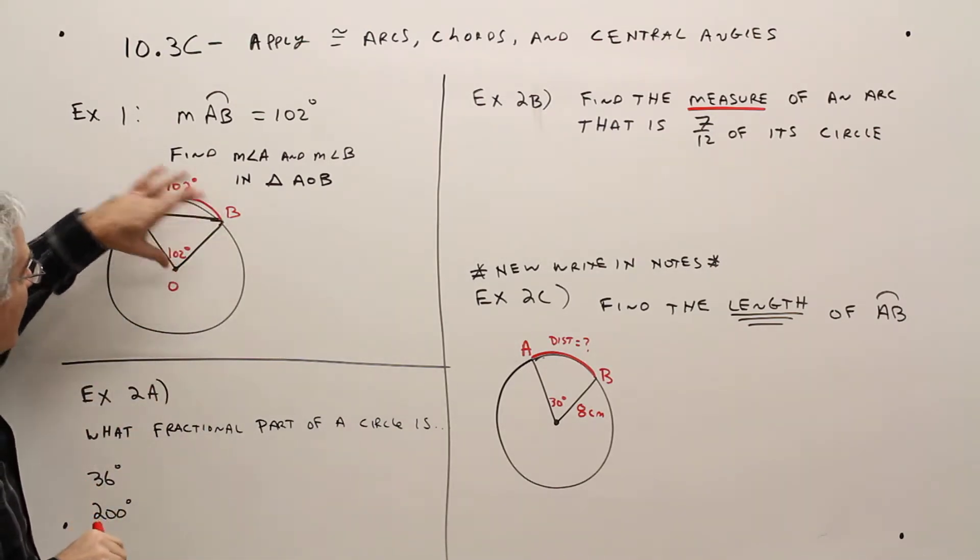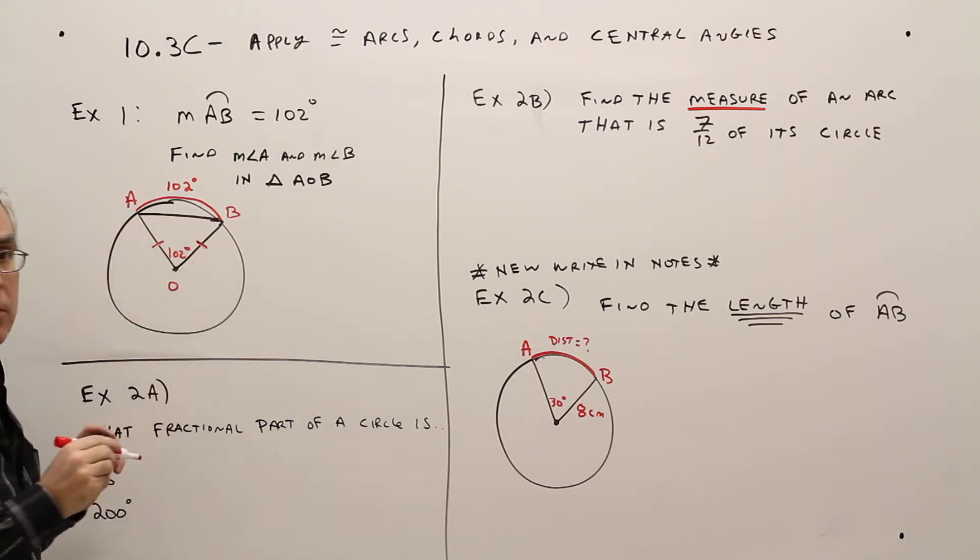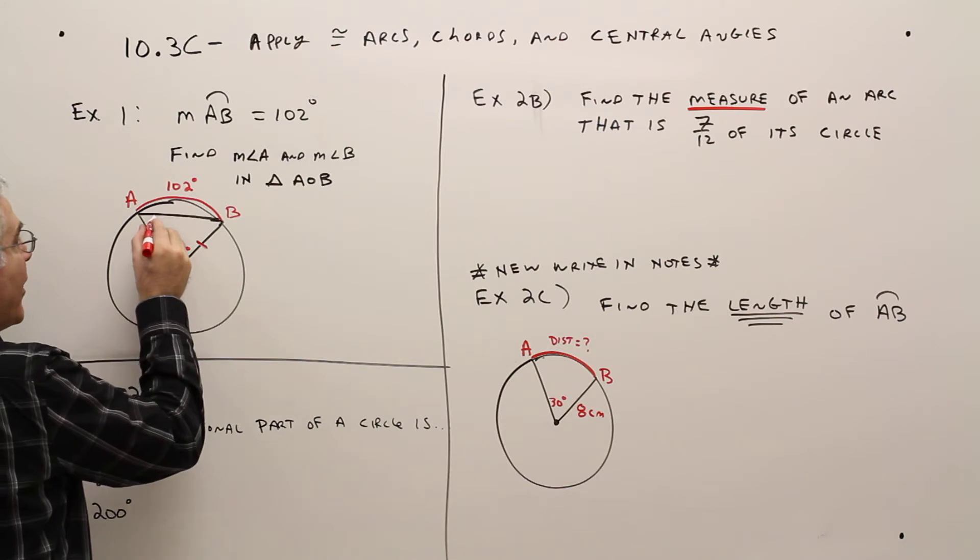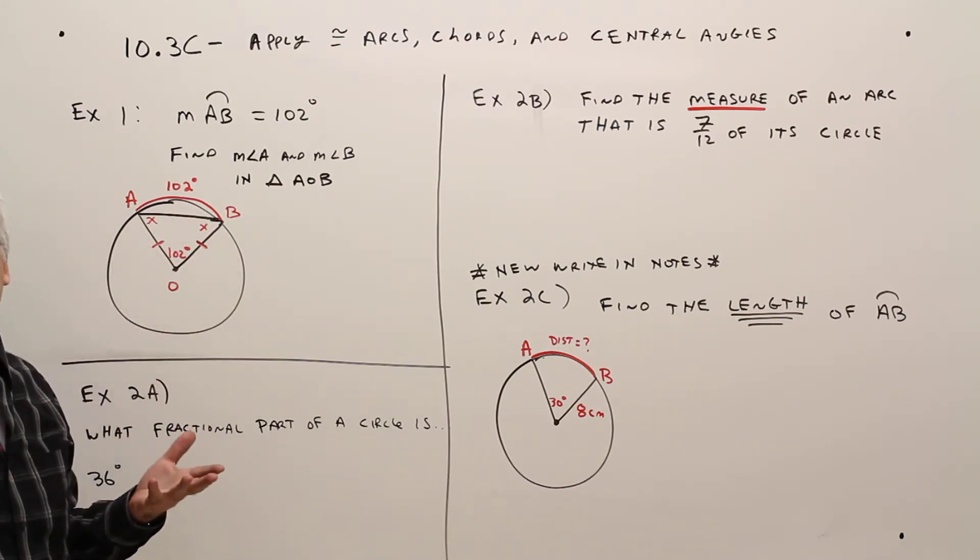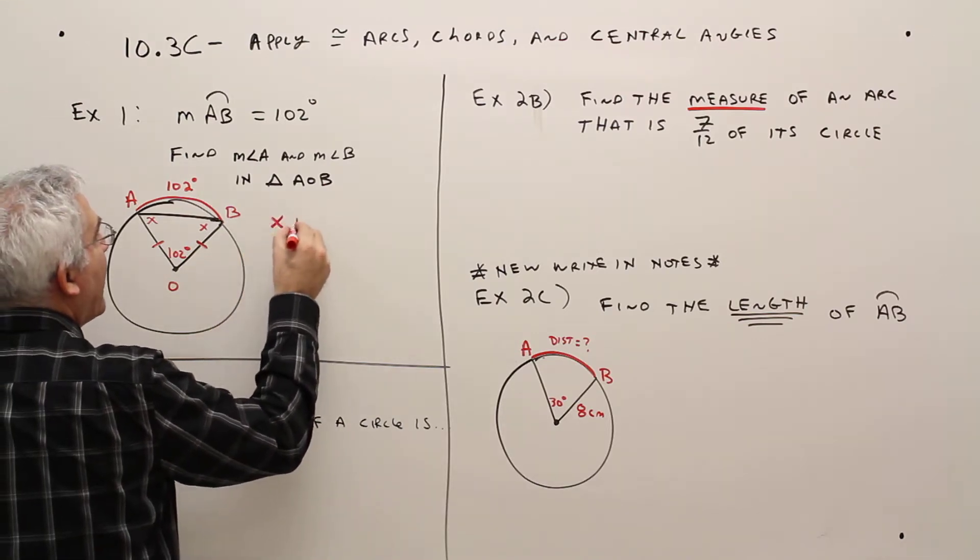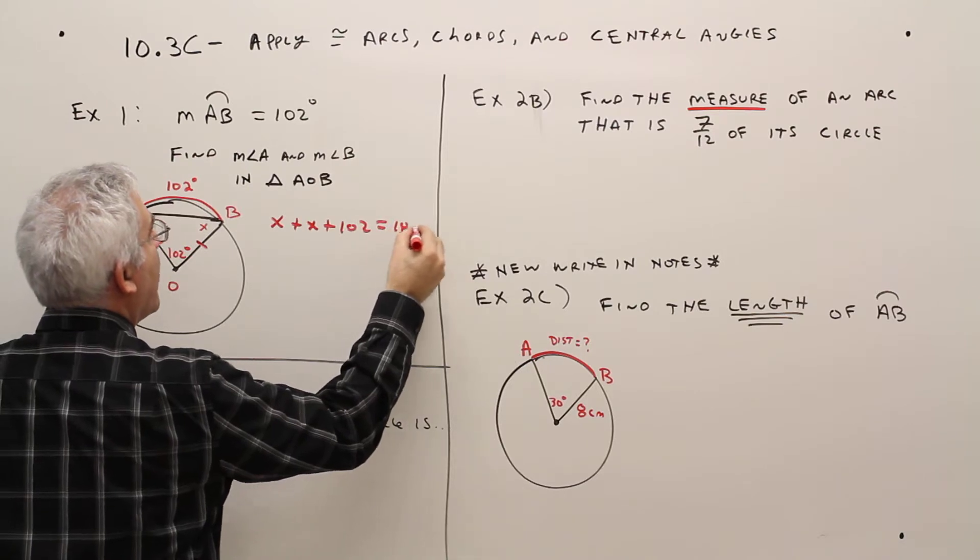I also know that this is a radius and this is a radius, so those two things are congruent. So if I wanted to, I could call that X and that X. And then I know the sum of the degrees in a triangle is 180. So I could say X plus X plus 102 equals 180.